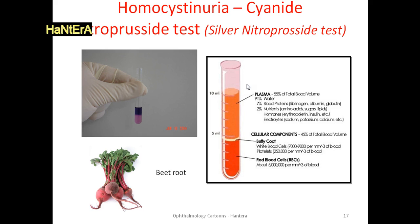To confirm homocystinuria, plasma analysis for amino acids — especially hypermethioninemia and homocystinemia — is important. Urine analysis with cyanide nitroprusside test is one of the important lab investigations. Twelve drops of aqueous solution of sodium cyanide on the urine, then agitated — immediate color change from pink to beetroot color equals presence of disulfide compound in urine, which is positive in both acetonuria and homocystinuria. Silver nitroprusside test is a modification to exclude acetonuria.